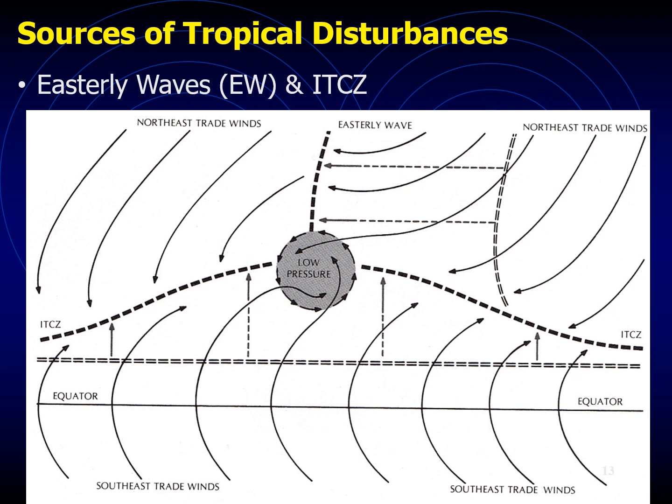The intertropical convergence zone — the ITCZ — is shown here, where the easterly trade winds converge to trigger numerous tropical storms. The troughs of low pressure called tropical or easterly waves in trade wind flow converge on the eastern side of the easterly waves to trigger tropical storms. Middle latitude cold fronts moving to lower latitudes also cause the convergence of air.